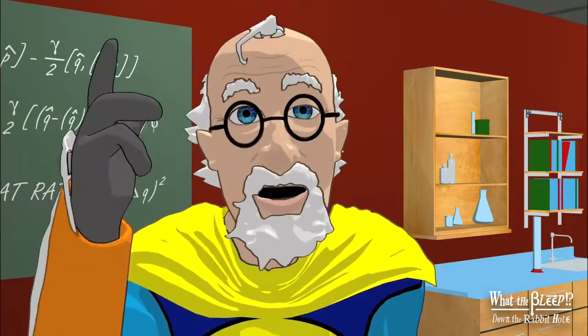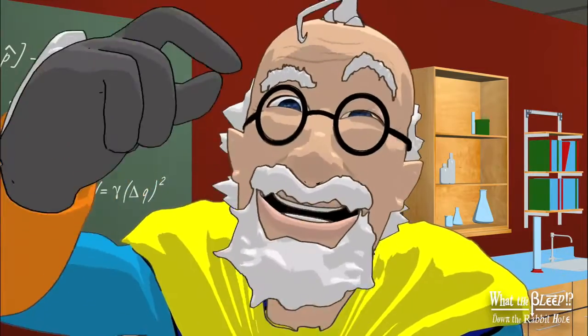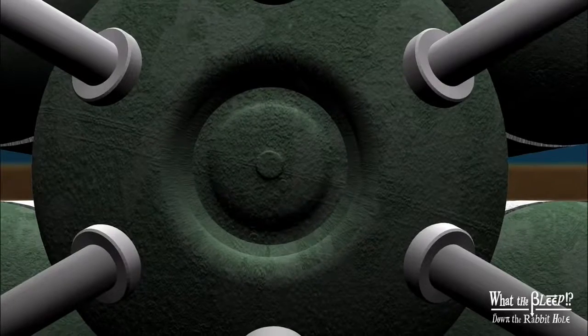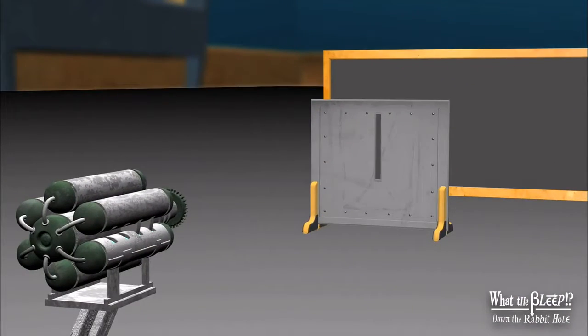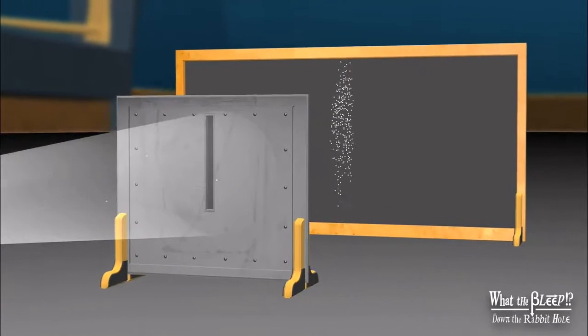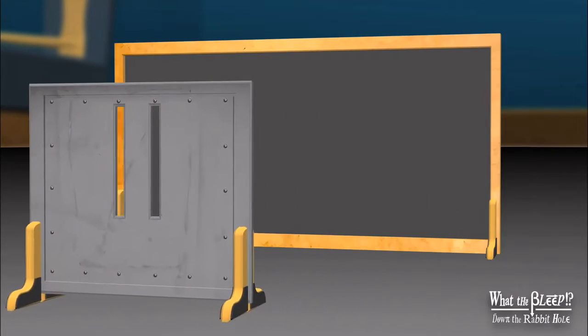An electron is a tiny, tiny bit of matter, like a tiny marble. Let's fire a stream through one slit. It behaves just like the marble, a single band. So if we shoot these tiny bits through two slits, we should get, like the little marbles, two bands.